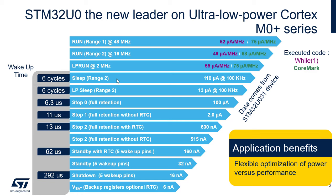Moving now to Sleep mode — this is when the CPU is turned off. We can reach, for example, 100 µA at 100 kHz. Then we have Low Power Sleep; at 100 kHz we are reaching 13 µA, which is very low power. In terms of wake-up time for the sleep modes, this is very fast — only six cycles.